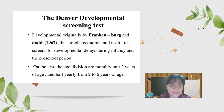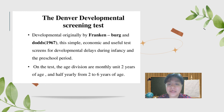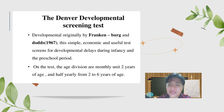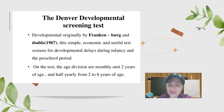The Denver Developmental Screening Test was originally developed by Frankenberg and Dodds in 1967. This simple, economical, and useful test screens for developmental delays during infancy and the preschool period. On the test, age divisions are monthly from birth to 2 years of age, and half-yearly from 2 to 6 years of age.